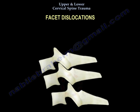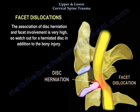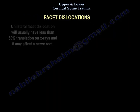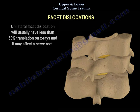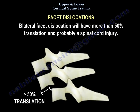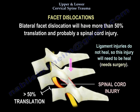Regarding facet dislocations, the association of herniated disc and facet involvement is very high, so watch out that you don't have a herniated disc in addition to the bony injury — that's double trouble. A unilateral facet dislocation usually shows less than 50% translation on x-rays and may affect a nerve root. Bilateral facet dislocation will show more than 50% translation and probably a spinal cord injury. Ligamentous injuries don't heal, so it needs to be fused — it needs surgery.